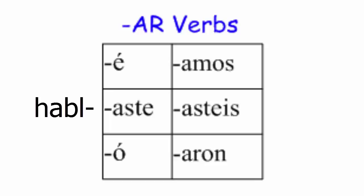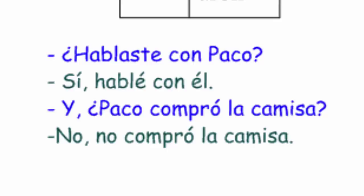If you're in Spain talking to a group of friends, vosotros hablasteis; or ellos hablaron — they talked; or ustedes hablaron. For example, we can put hablar into a mini conversation. Did you speak with Paco? ¿Hablaste con Paco? Yes, I spoke with him — Sí, hablé con él. And Paco bought the shirt? ¿Y Paco compró la camisa? No, he did not buy the shirt — No, no compró la camisa. Don't forget the accents on the yo form and the él/usted form for AR verbs.